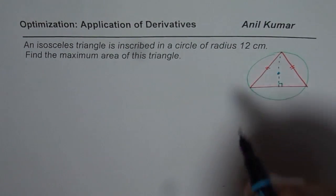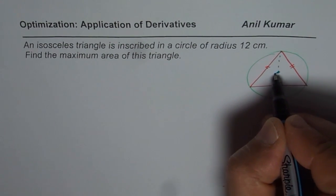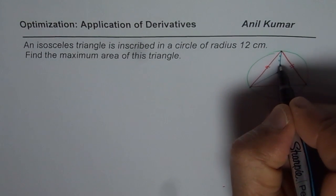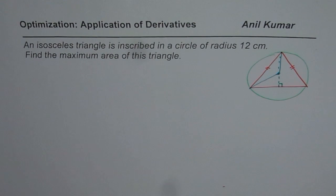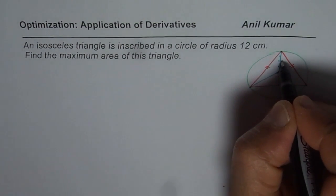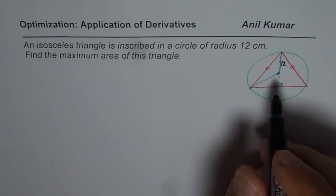We are given that the radius is 12. If the radius is 12, let me sketch it so that this is the radius. So what we are given is that the radius of this circle is 12, and that gives you this side which is 12.